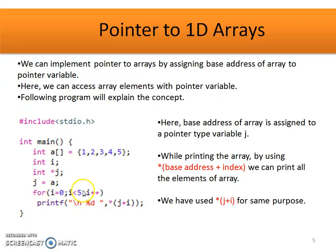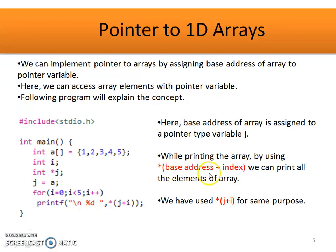With this for loop, for i to i less than 5, we are displaying the value available at the address location j plus i. This j plus i is the formula: value available at base address plus the index location. The same thing is used here to display the content of the array with the help of the Pointer variable.